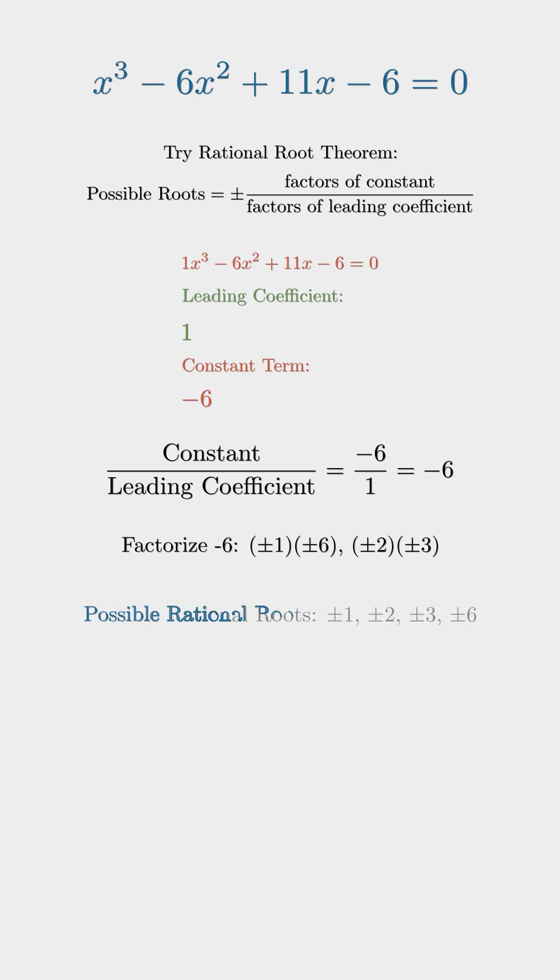So the possible rational roots, as per the rational root theorem, are ±1, ±2, ±3, and ±6.